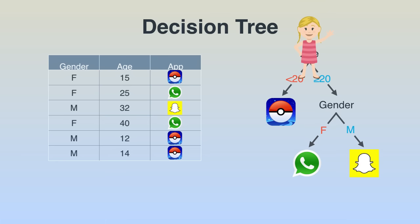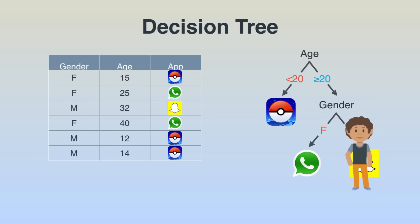Whenever we have a new user, we put them through the decision tree and recommend whatever app the tree suggests. For example, for a young person we recommend Pokémon Go. For an older person we check their gender — female gets WhatsApp, male gets Snapchat. Obviously there won't always be a tree that perfectly fits our data, but in this class we'll learn an algorithm that helps us find the best fitting tree for any table of data.